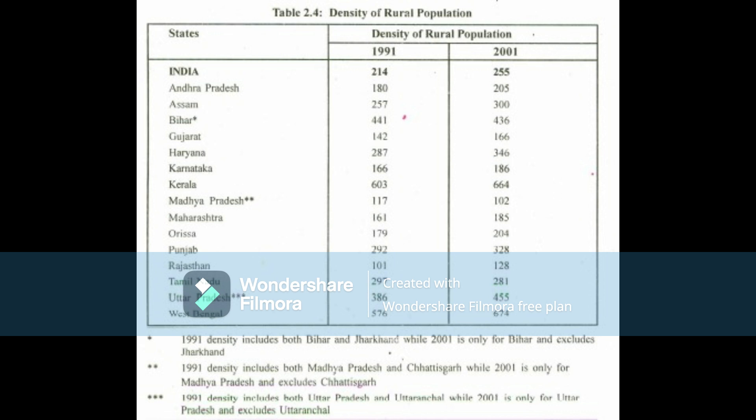Check Your Progress 1. 1. What is the reason for the decline in population in Bihar and Madhya Pradesh in contrast with the situation in Rajasthan and Uttar Pradesh in 2001? 2. Why is the density of Kerala or West Bengal higher than Madhya Pradesh or Rajasthan?